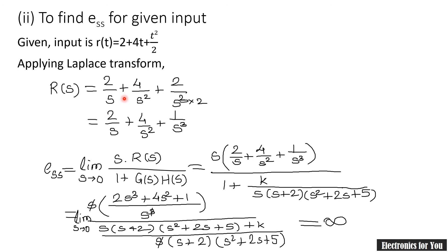So that's all for our E_ss problem. We found the value of K which is greater than or equal to 50, and E_ss is infinity for the complex input due to the parabolic component. I am making videos in English as well as in Hindi, so if you know Hindi you can find the Hindi version via the link shown. Thank you.